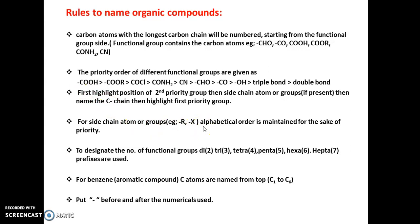The fourth point is for the side chain atoms or groups: the priority order will be in alphabetical order. Suppose there are two side chain groups, methyl and ethyl. Since ethyl starts with 'e' and methyl starts with 'm', and 'e' comes before 'm' alphabetically, ethyl will be named first. So the position of the ethyl group will be named first, and then the position of the methyl group.